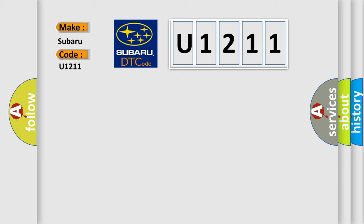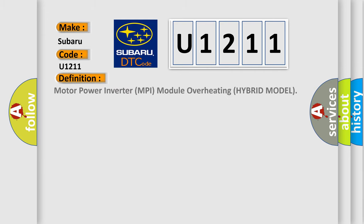Subaru car manufacturer. The basic definition is Motor power inverter MPI module overheating hybrid model. And now this is a short description of this DTC code.